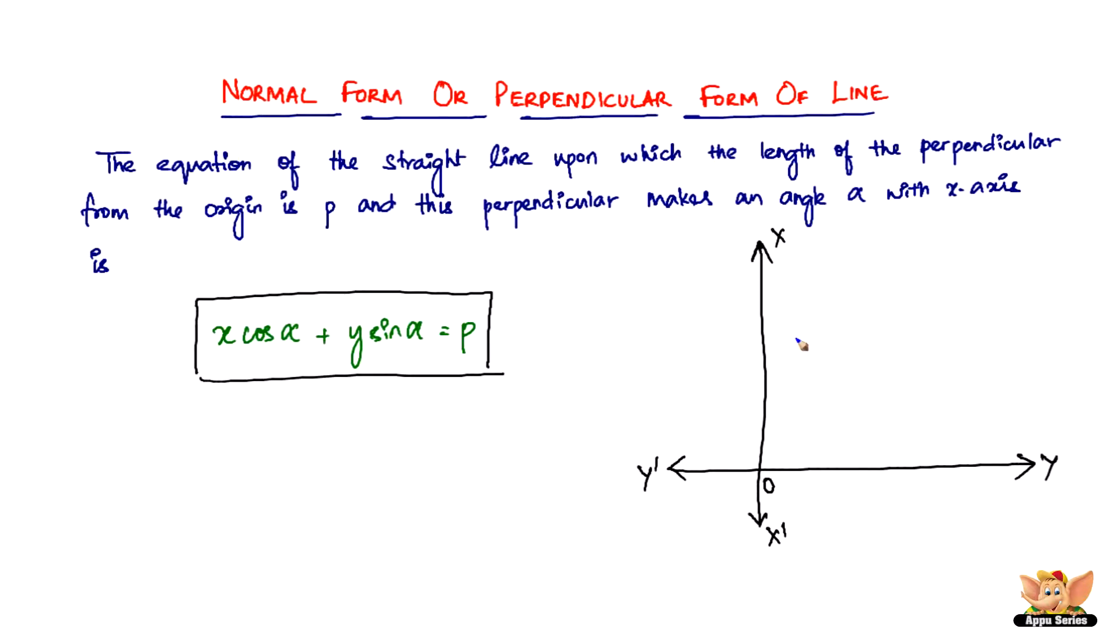So the line that we are talking about is this. It's going to be something like this. Let's name this line AB.